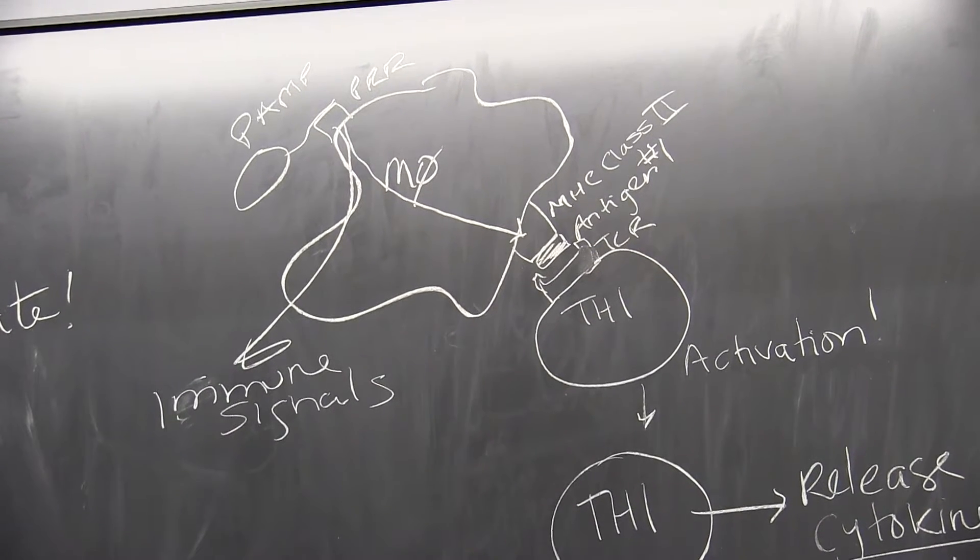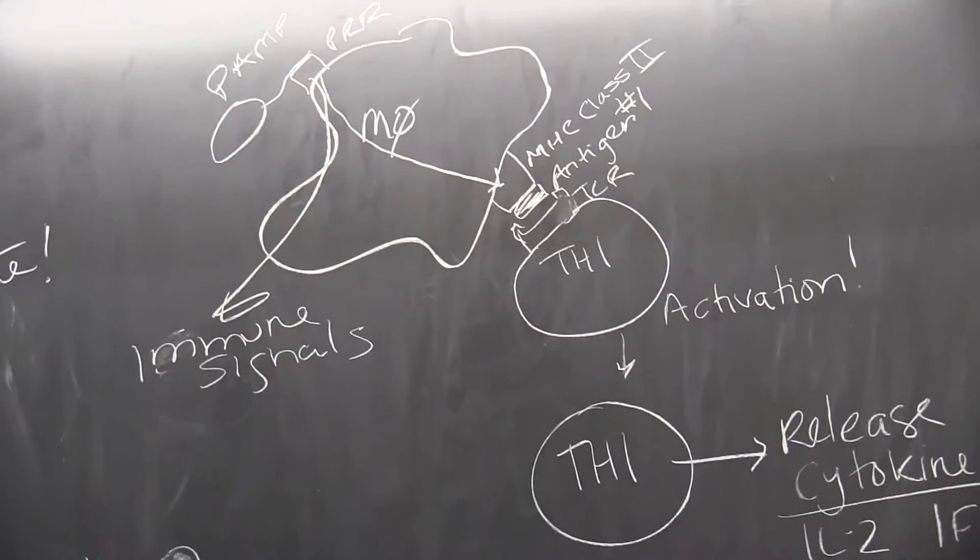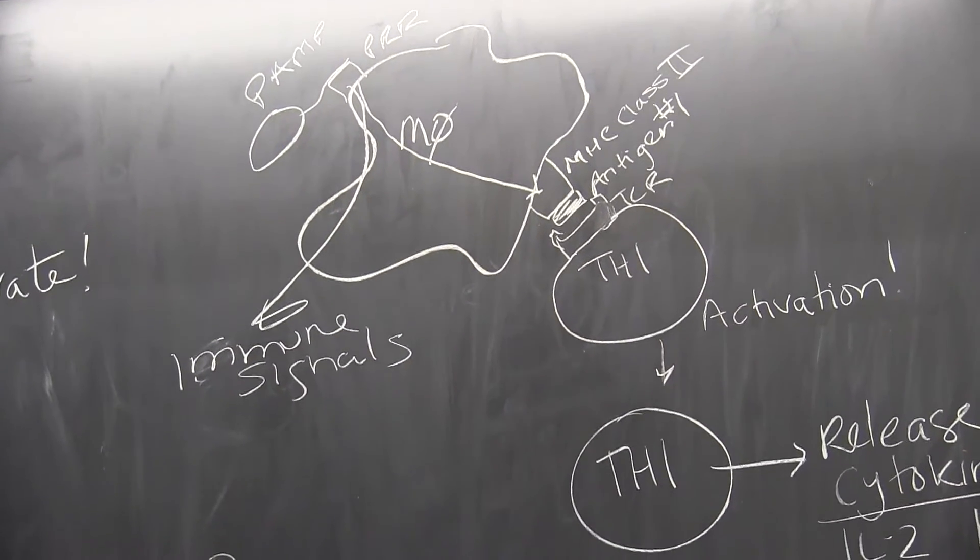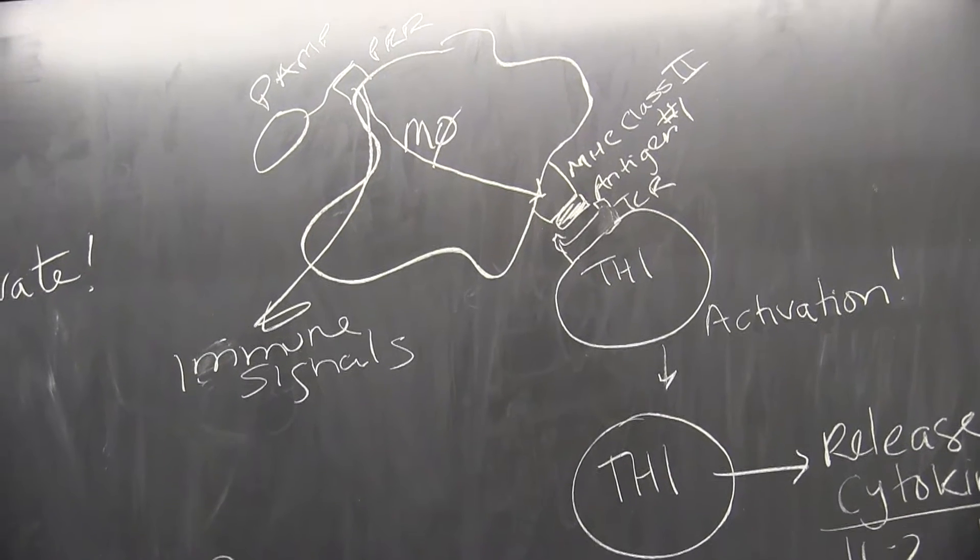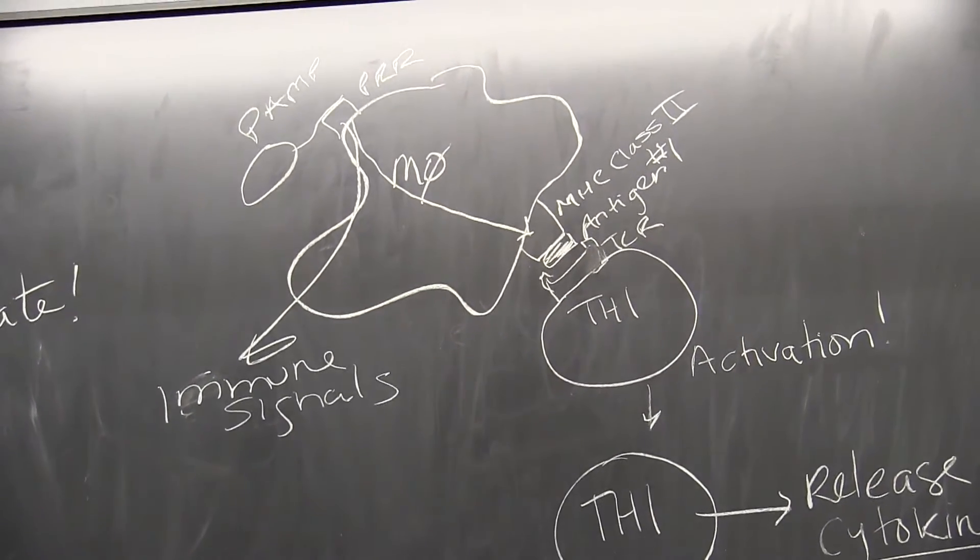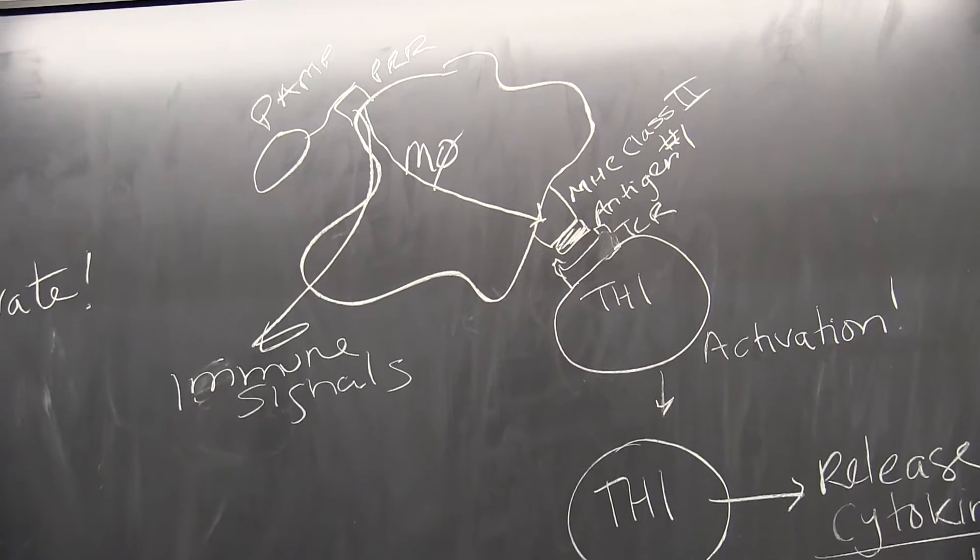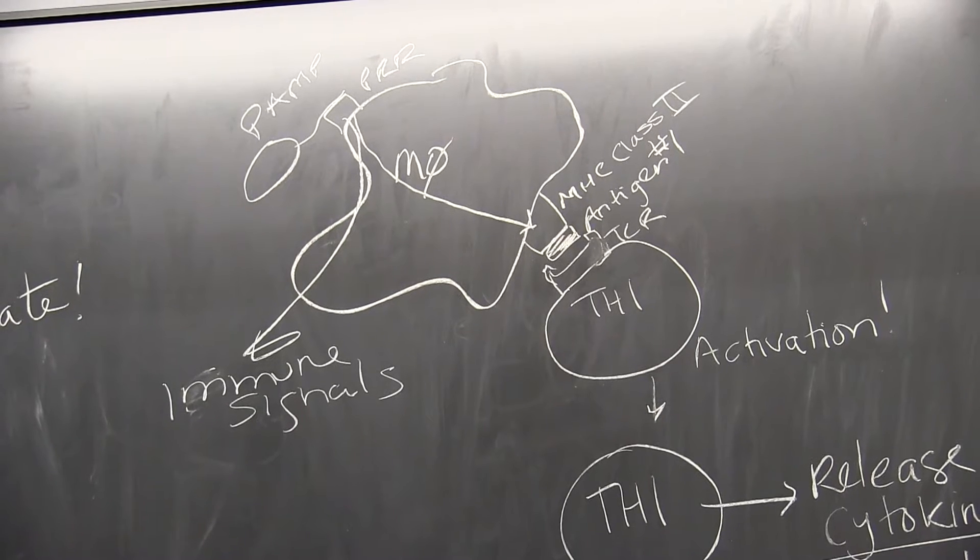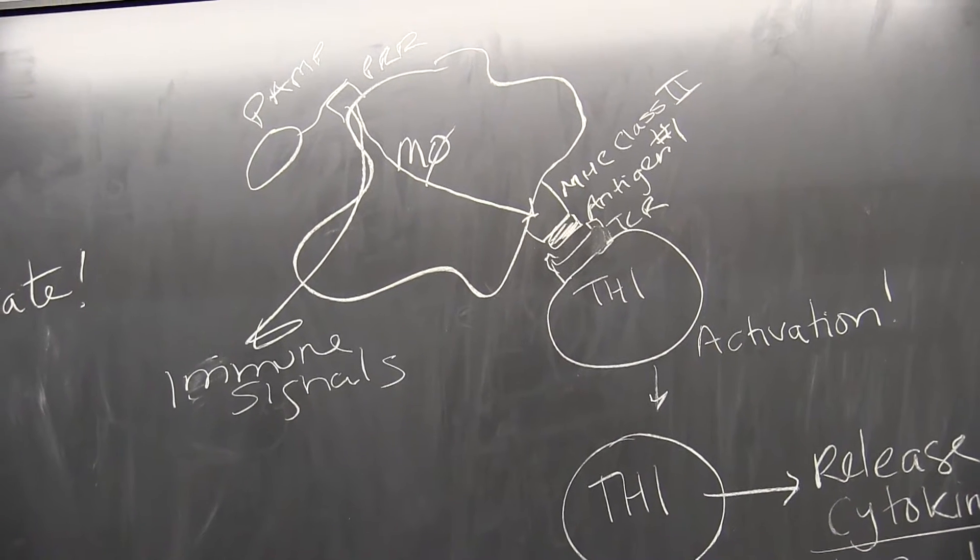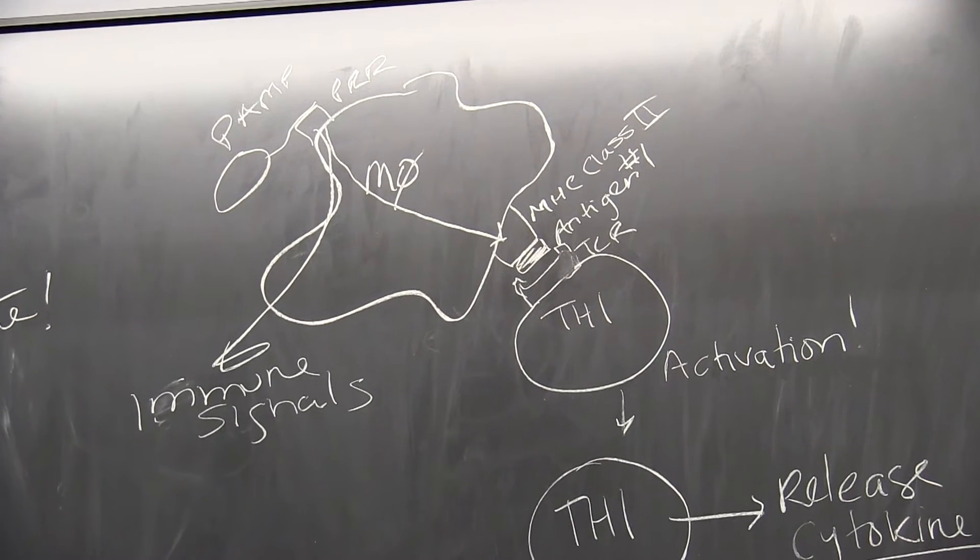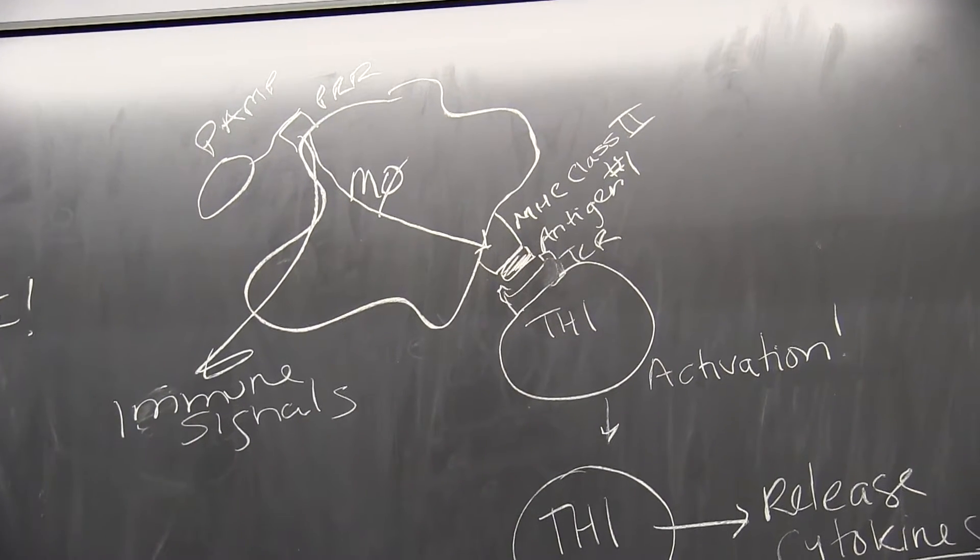One is that the macrophage produces and releases immune signals. So immune signals are what we call cytokines, and these can have physiological impacts or responses, especially if these cytokines travel up to the brain, and they can induce fever, swelling, sweating, all of these things associated with inflammation, aka the inflammatory immune response.